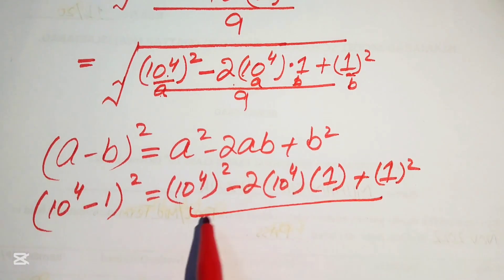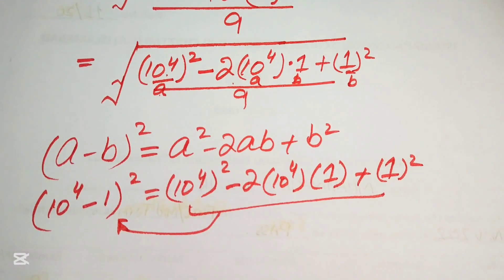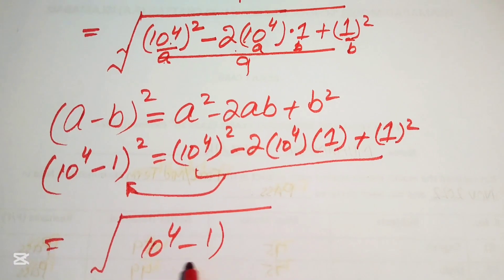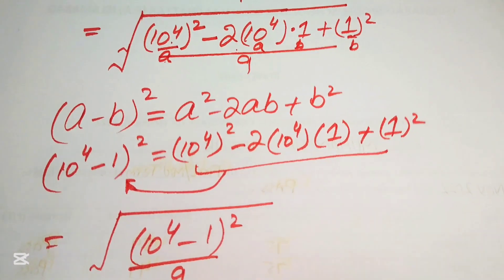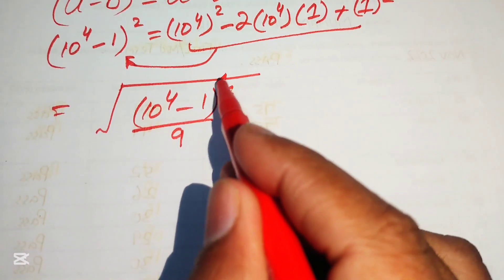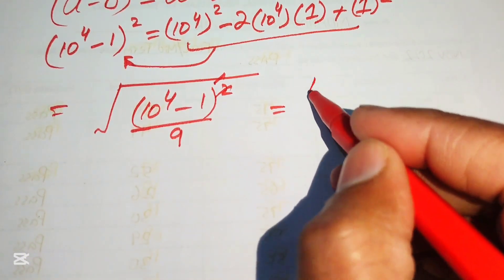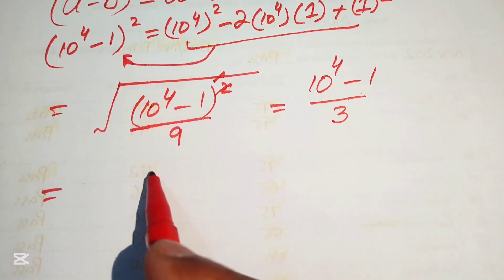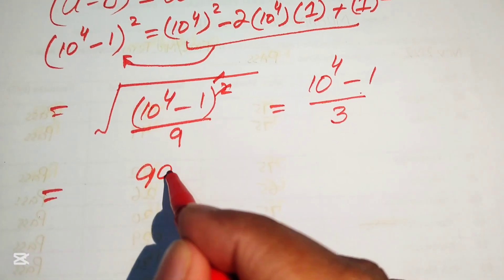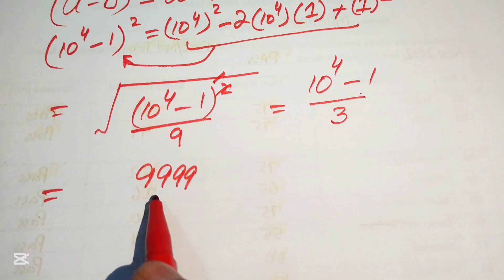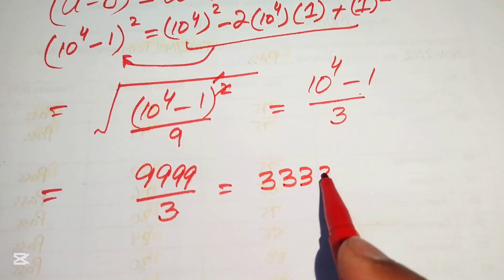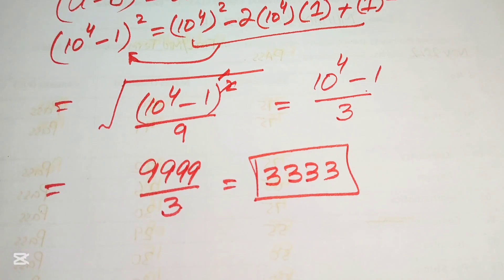We substitute this value inside the square root: our expression becomes ten raised to power four minus one, whole squared, divided by nine. When you take the square root, the square and square root cancel, and we know the square root of nine equals three. So we get ten raised to power four minus one, divided by three. Ten raised to power four minus one equals nine thousand nine hundred ninety-nine (9999), divided by three. When you perform the division you get three thousand three hundred thirty-three (3333). This is the final simplified form of the given expression. Thank you so much for watching this video — please subscribe to my channel for more exciting videos.